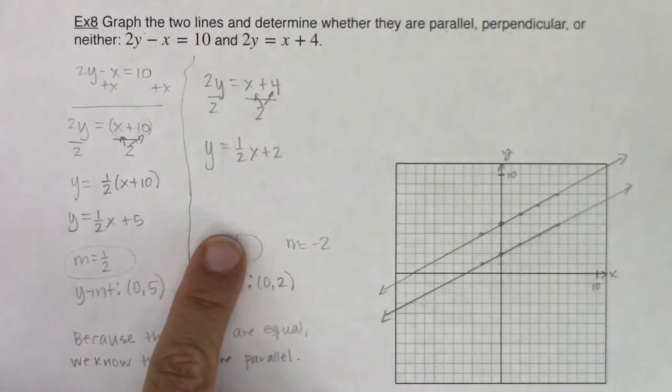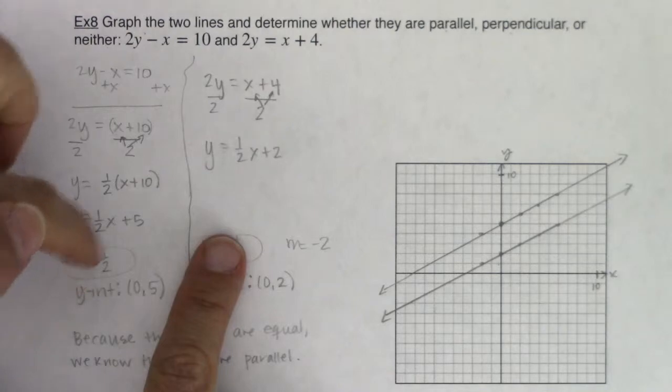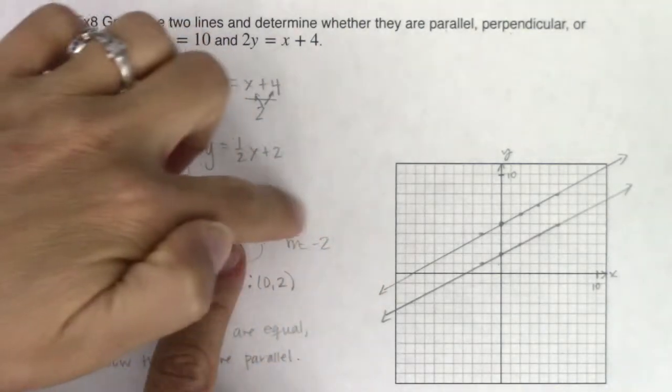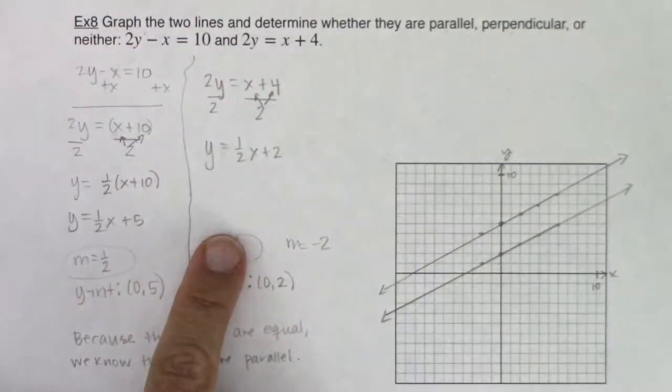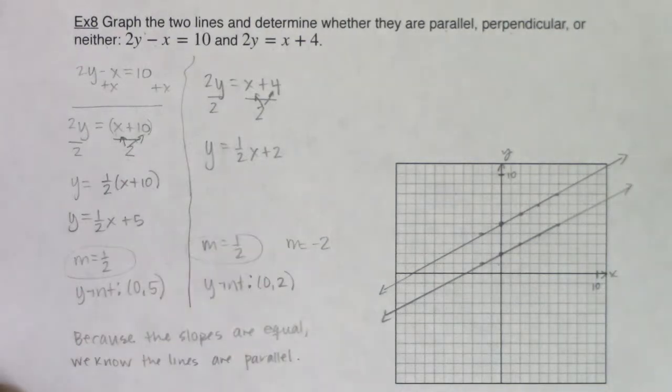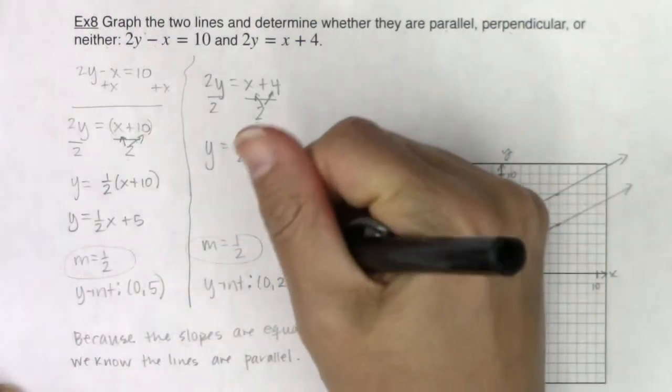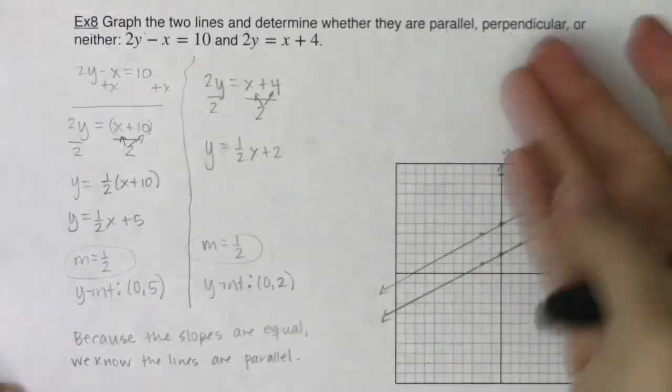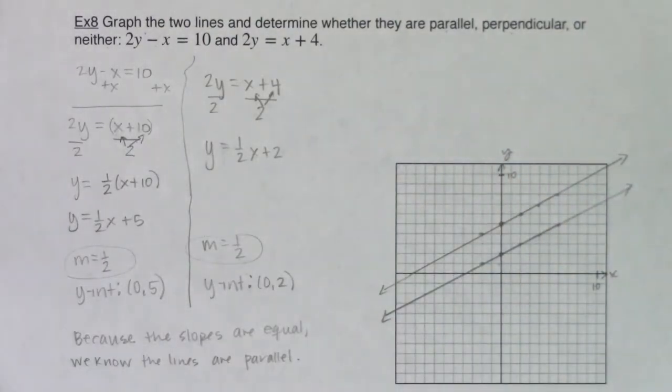And if the slopes, if this was 1 half and this was any number other than 1 half or negative 2, then the answer would have been neither. All right, but I want to erase this because this isn't our slope. All right. So we're going to practice one more of these and wrap up this section. All right. See you in a bit.